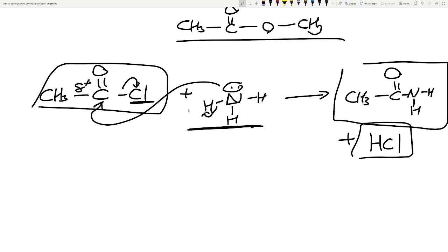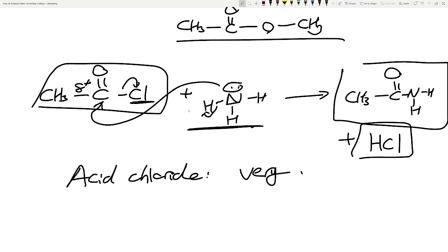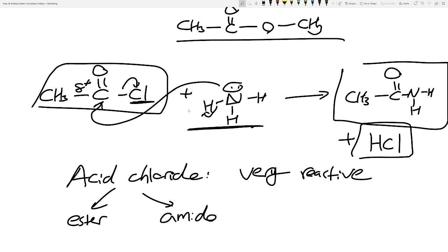In short, acyl chloride — or just COCl in general — is extremely reactive. You can turn it into an ester, you can turn it into an amide, and you can do this really easily without any catalyst or heat, because they are extremely reactive.